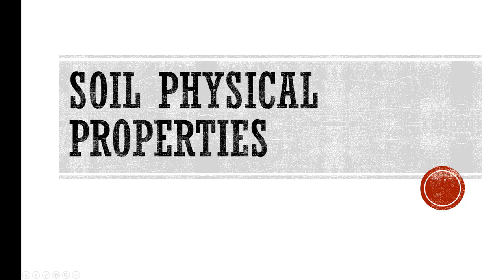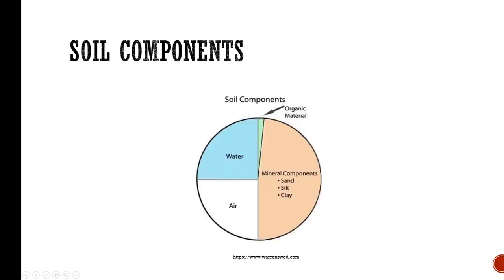This week we're talking about the physical properties of soil. You probably remember this from the first day — this is an idealized soil. About 45% will be mineral components: sand, silt, and clay, and that's primarily what we're talking about today, although we will delve into organic material a little bit. Ideally you have 50% pore space, and hopefully each is about half water, half air.